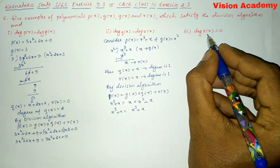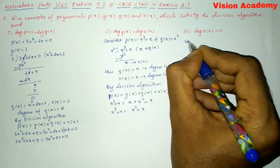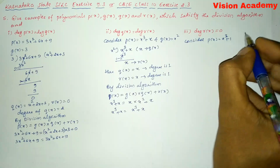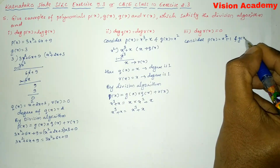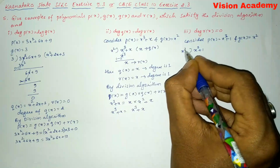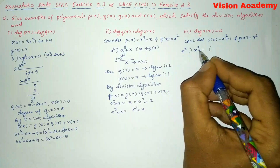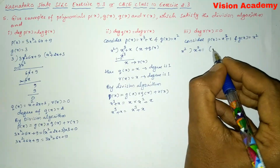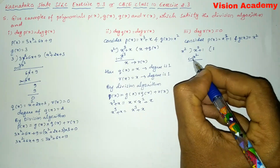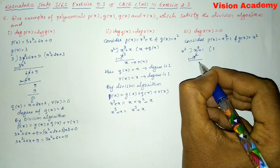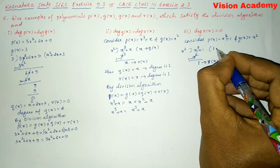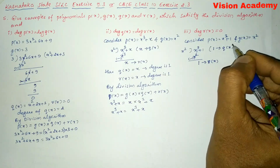Now let us move on to Roman number 3: degree of r(x) is equal to zero. Let us consider p(x) = x² + 1 and g(x) = x². Dividing x² + 1 by x²: what do I multiply to x² to get x²? That is 1, so x² × 1 = x². Subtract — the x² terms cancel — and the remainder is 1. So r(x) = 1 and q(x) = 1.